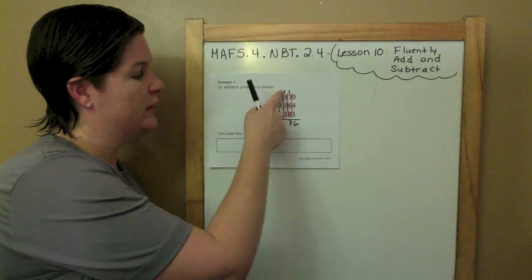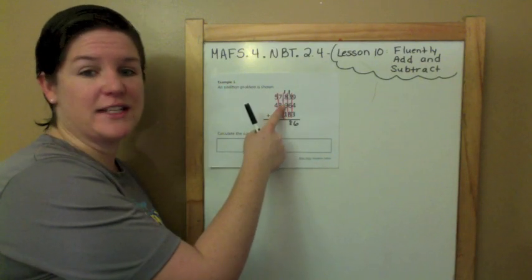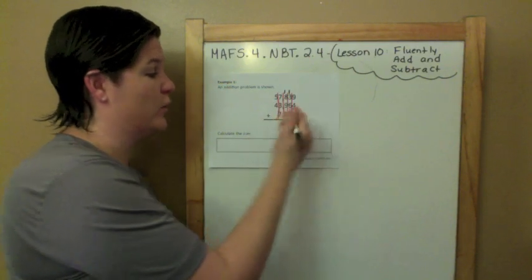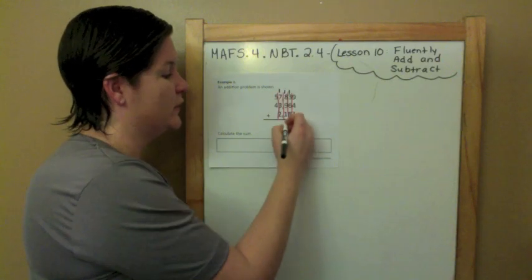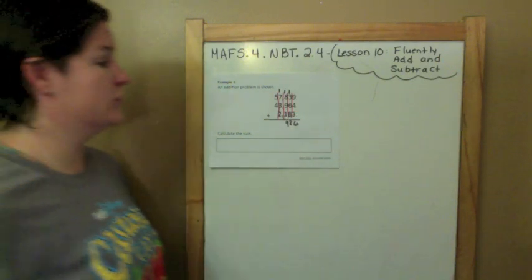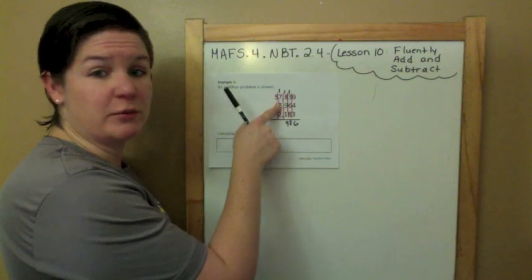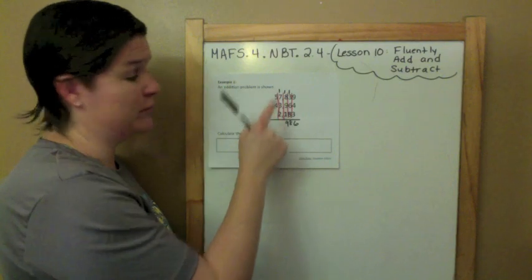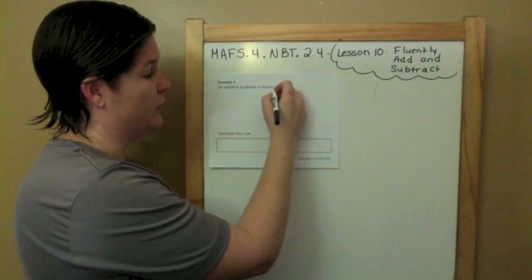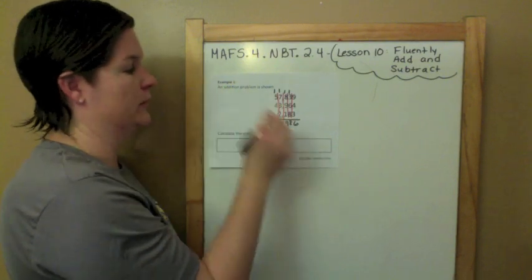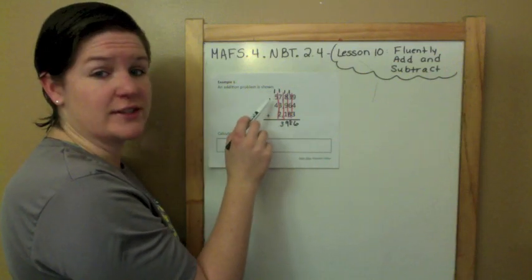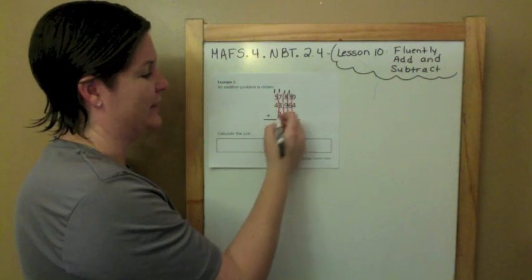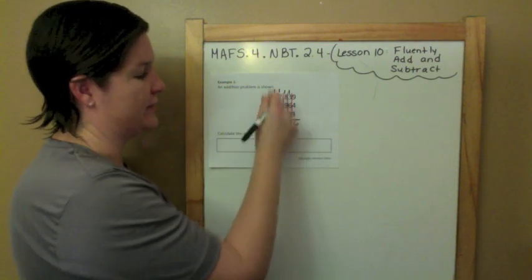I'm going to do 1 and 9 because that's an easy 10. 10 plus 8 is 18. 18 plus 1 is 19. Carry the 1. Then 7 plus 3 — that's an easy 10. 10 plus 1 is 11, plus 2 is 13. Carry the 1. 1 plus 5 is 6. 6 plus 4 is 10. I can bring that down since there are no other numbers.